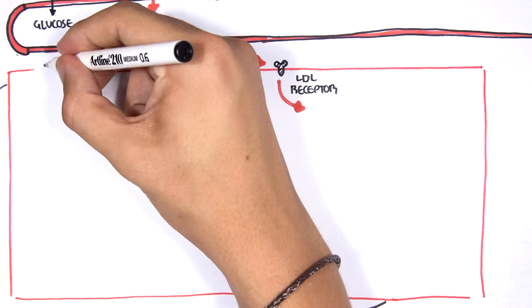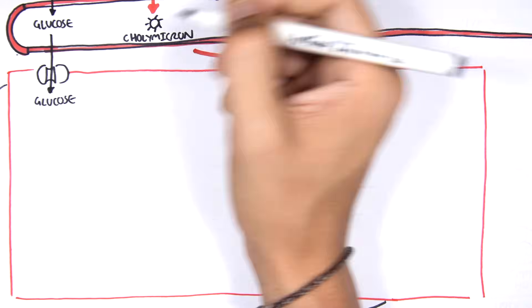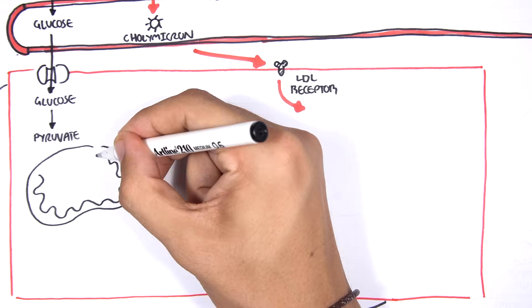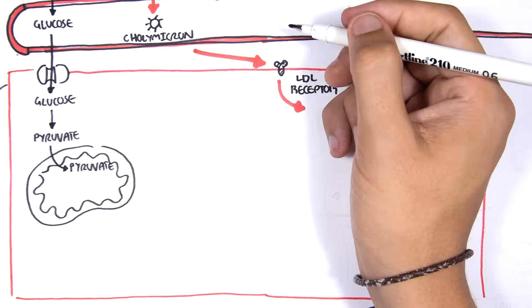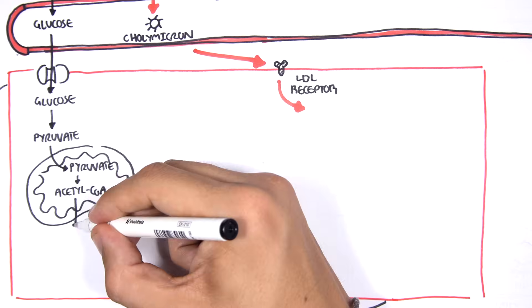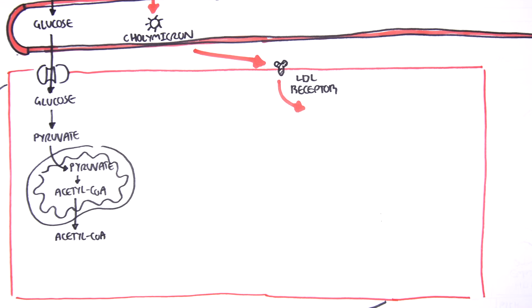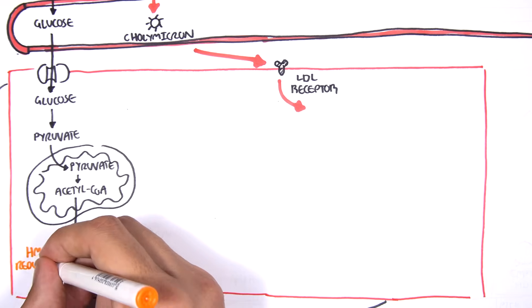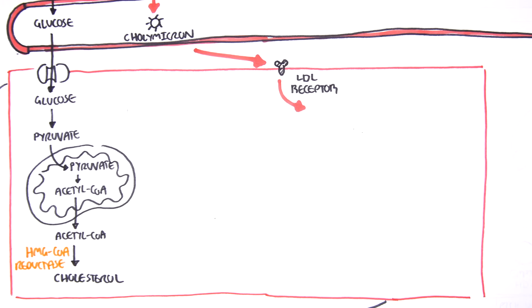The liver receives the glucose that we absorbed earlier. It takes it in and through glycolysis makes pyruvate. Pyruvate can move into the mitochondria of the hepatocyte and become acetyl-CoA. Acetyl-CoA can then get transported out of the mitochondria and can be eventually converted to cholesterol using an important enzyme called HMG-CoA reductase.